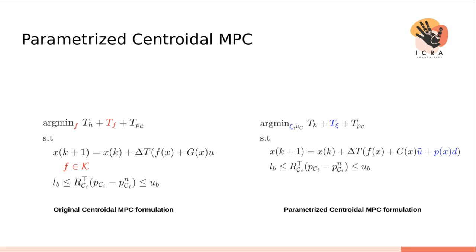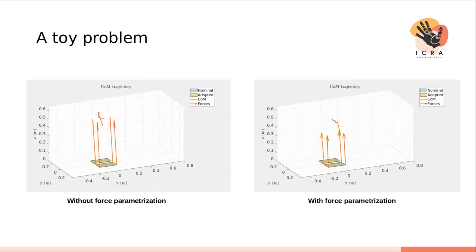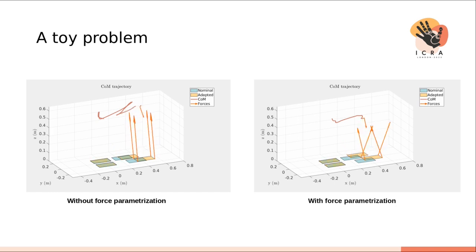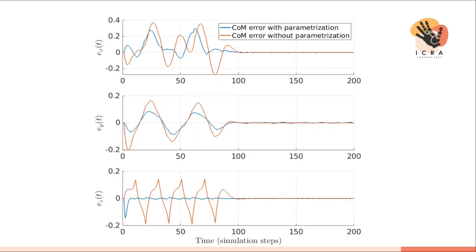This centroidal MPC, which we call the parametrized centroidal MPC problem, highlighted here and compared to the original formulation, is then applied to a toy problem of a mass with two feet walking in the x direction. The obtained trajectories are smoother. The tracking error and the tracking performance in terms of the center of mass and contact locations is better, and the computational times are slightly enhanced.